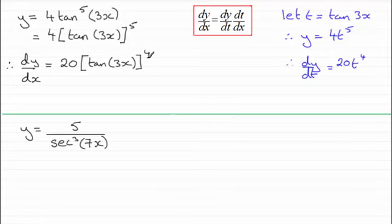Now I'd need to multiply it by dt by dx. Differentiate the thing that I called t. And I called t tan 3x.